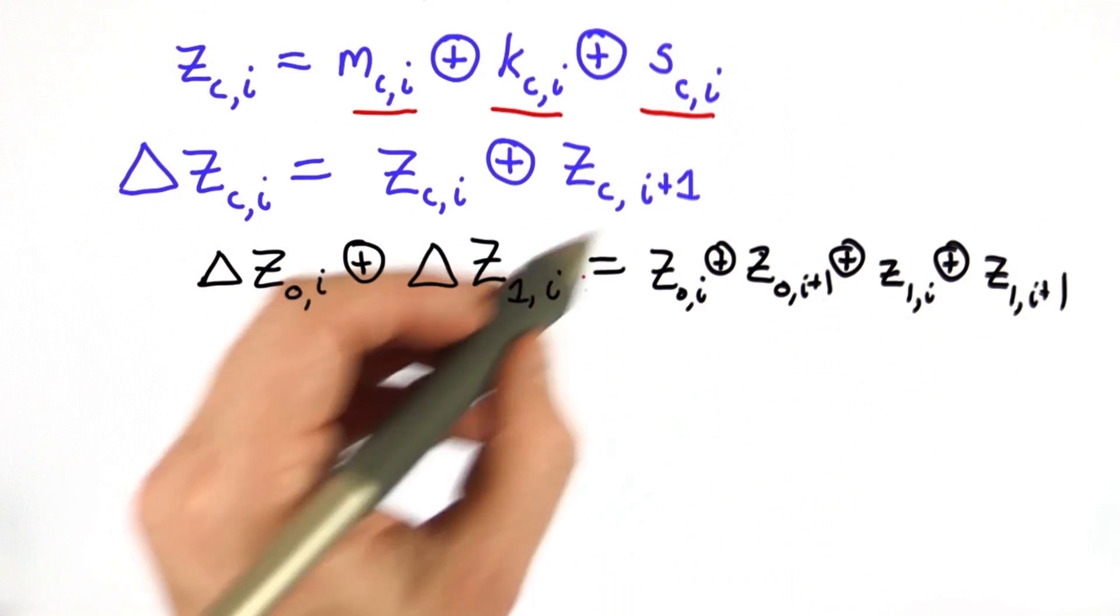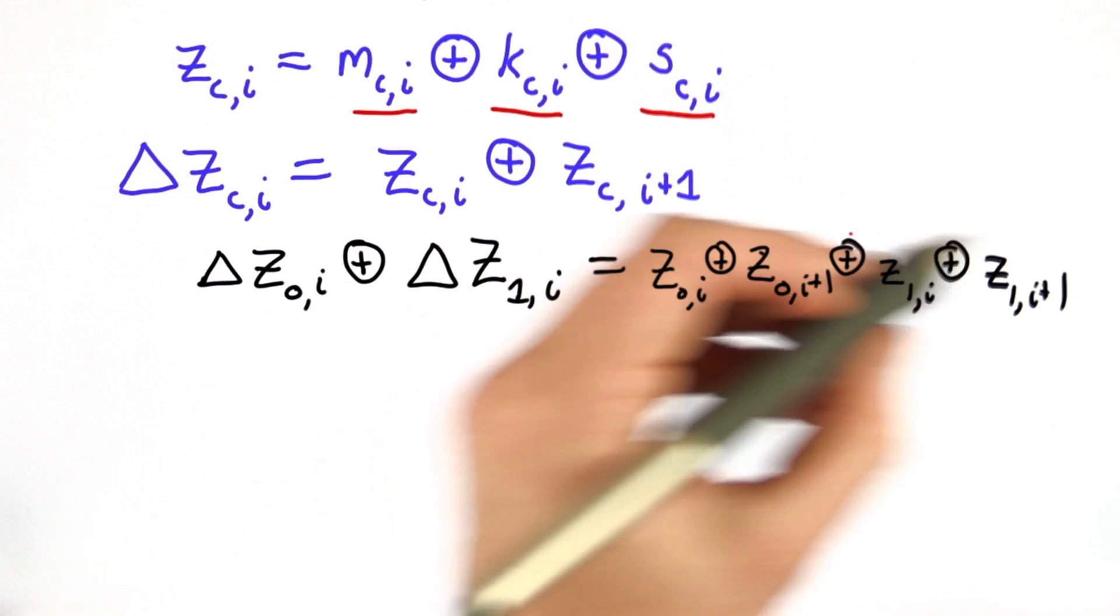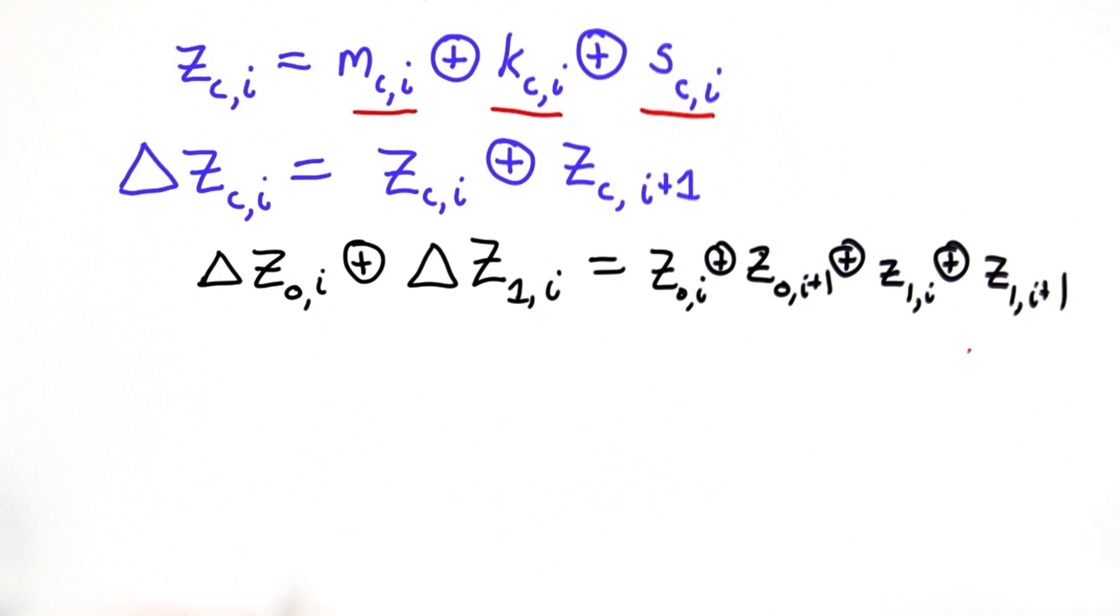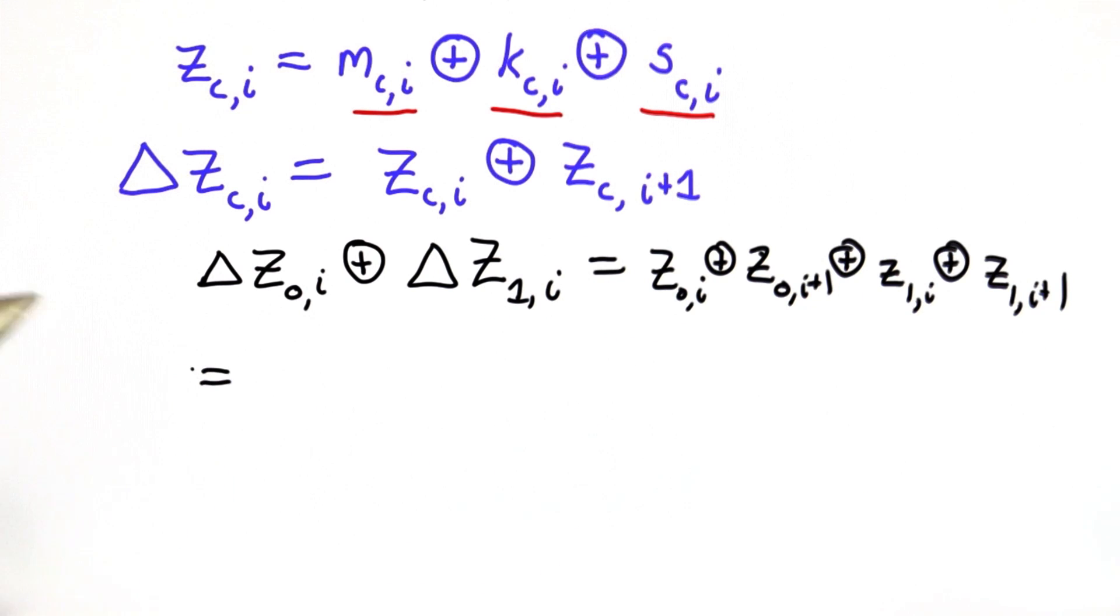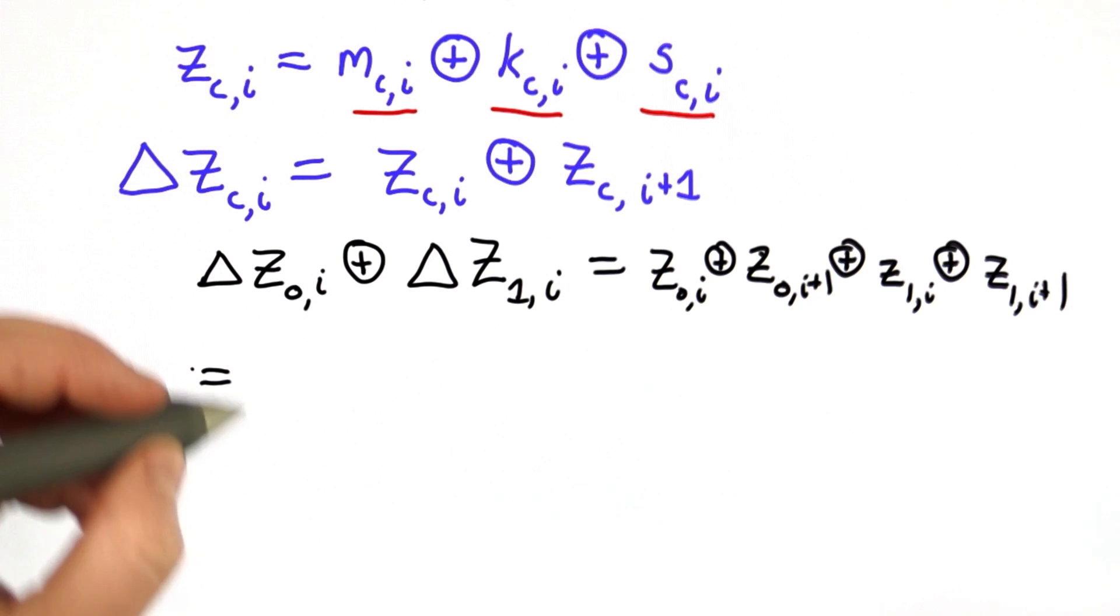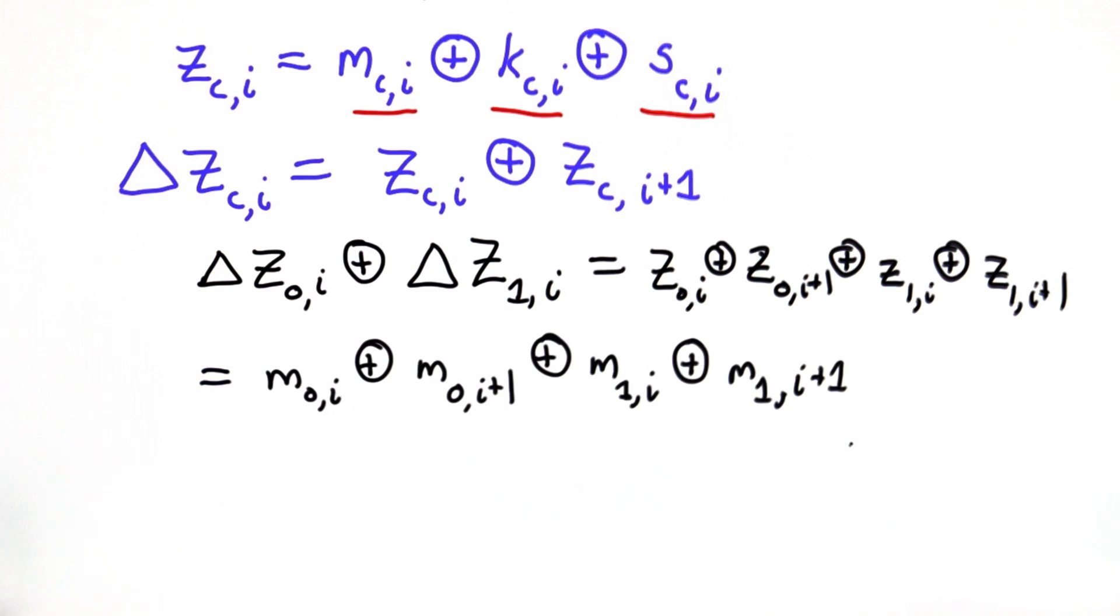Let's break them down into parts separating the m, the k, and the s parts that combine into this ciphertext. For the message bits, we have the XORs of all the message bits for the two channels, adjacent, and the key bits XORed with the message bits.